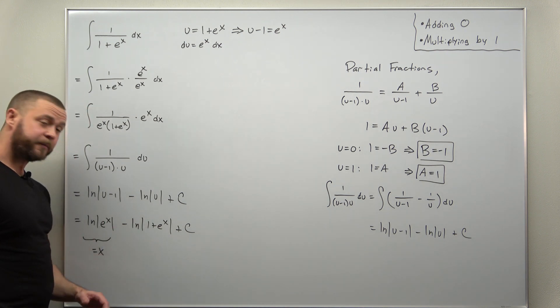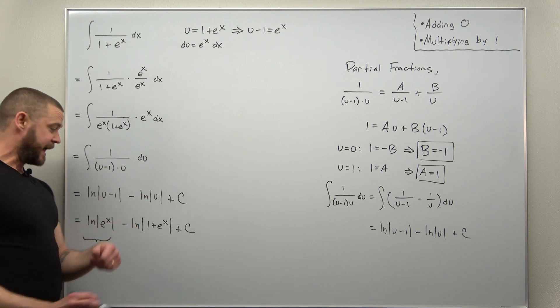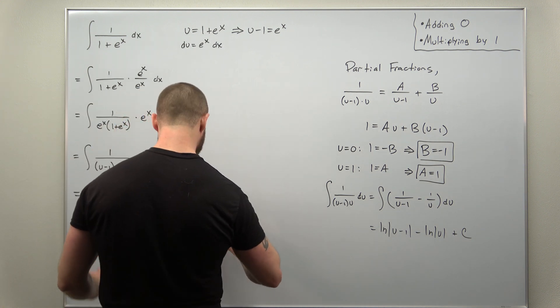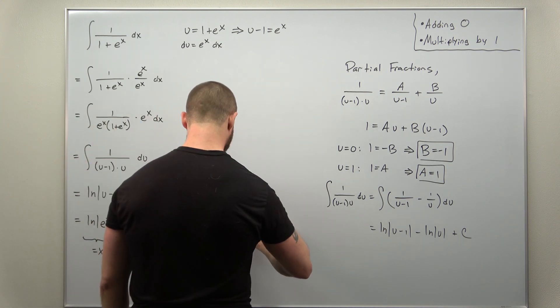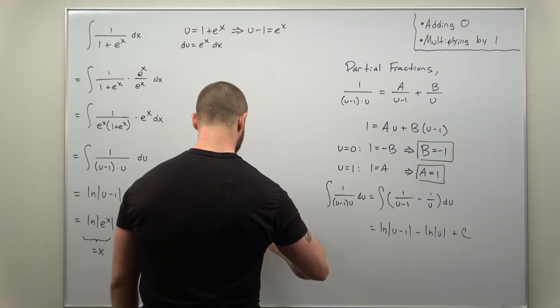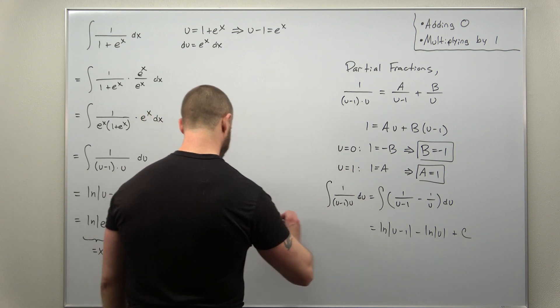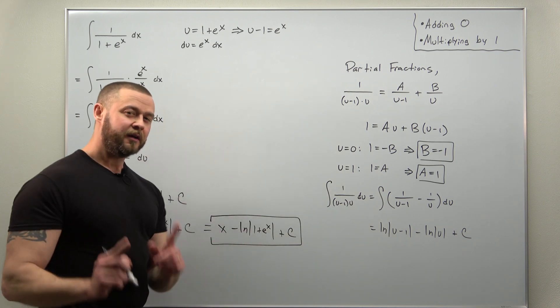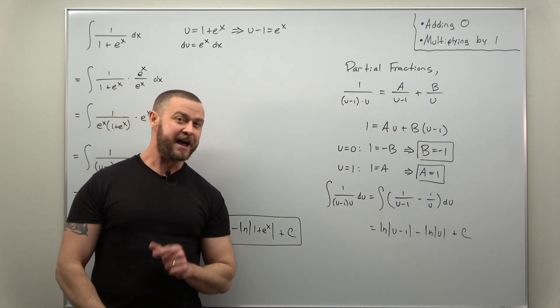We get the same answer, same antiderivative as before. We get it as x minus natural log of 1 plus e to the x. And don't forget your plus c. Us professors love taking off like a thousand points when you forget plus c.